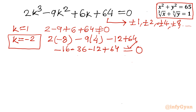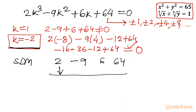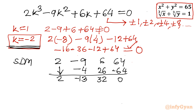Using synthetic division with root k = -2 and coefficients 2, -9, 6, 64: bring down 2; 2×(-2) = -4, giving -13; (-13)×(-2) = 26, giving 32; 32×(-2) = -64, giving 0. The resulting quadratic is 2k² - 13k + 32 equals 0.